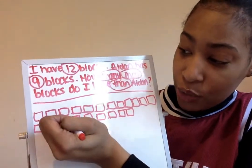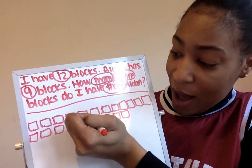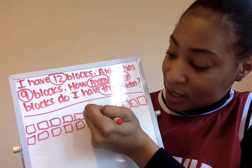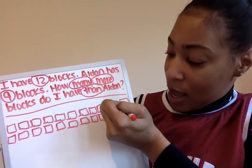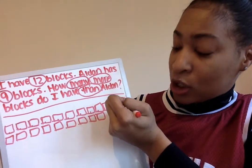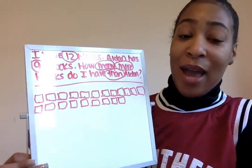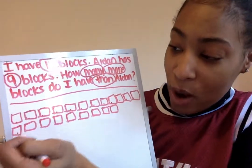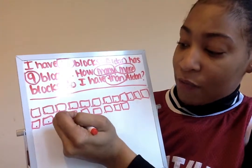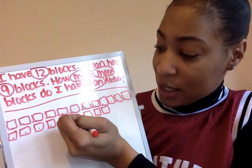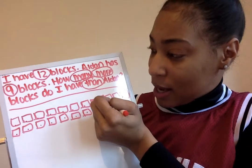Counting my blocks: one, two, three, four, five, six, seven, eight, nine, ten, eleven, twelve — so I have 12. Now let's make sure that Aiden has nine blocks: one, two, three, four, five, six, seven, eight, nine.